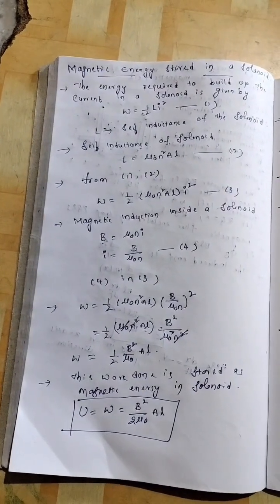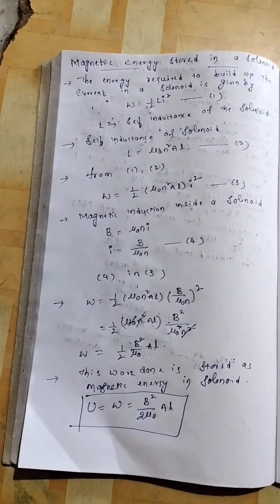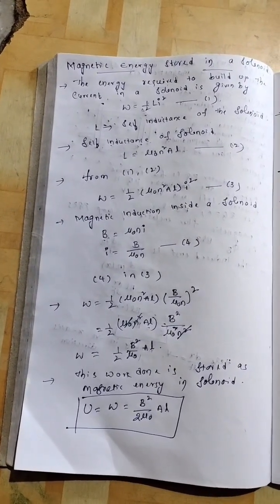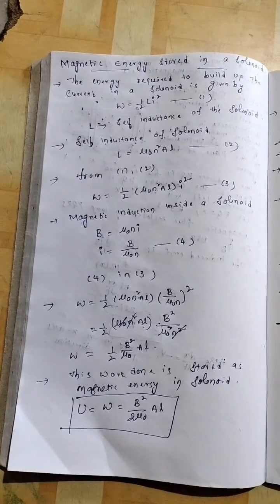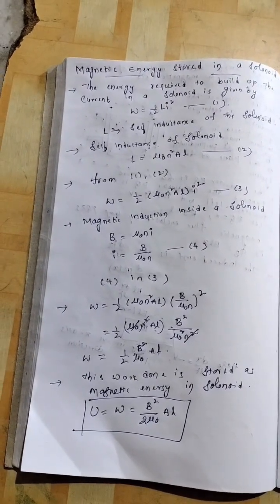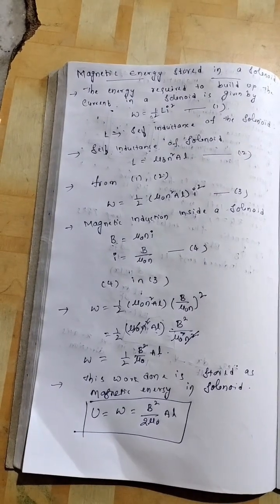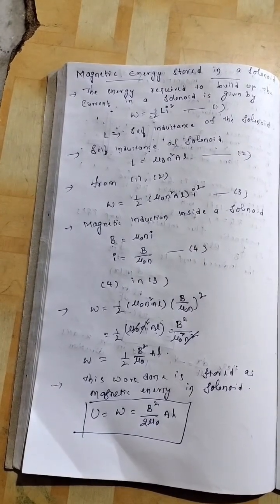Now, the formula for self-inductance of solenoid is l equal to mu0 n square al. Put it as equation 2. Now, let us substitute these two in the above equation that is w equal to half l i square.